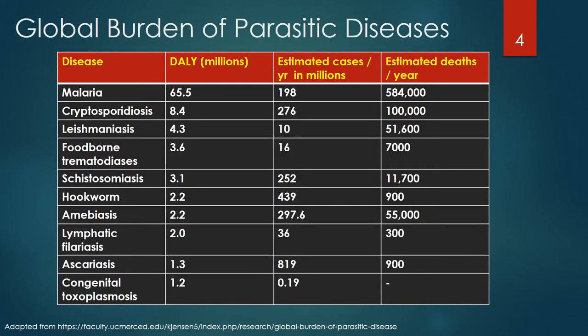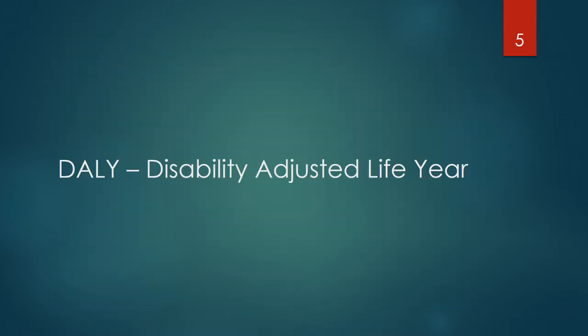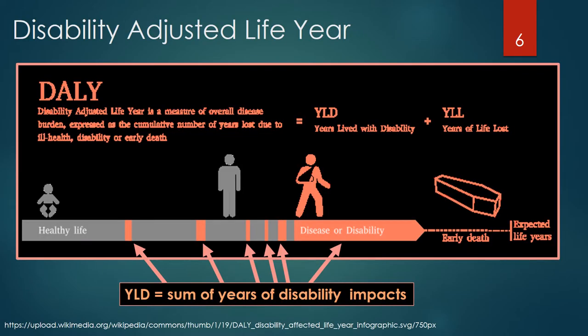This table presents the global burden of major parasitic diseases. The global burden order is determined by their DALY impact in millions. Let's take a few minutes to review the concept of DALYs. The Disability Adjusted Life Year, or DALY, was first used in 1993 in the World Development Report of the World Bank. A DALY is a health gap measure.